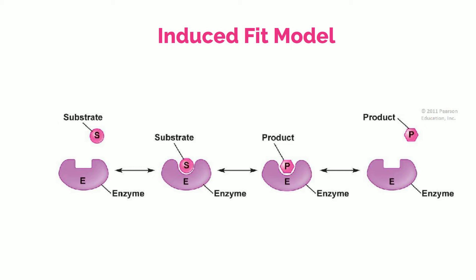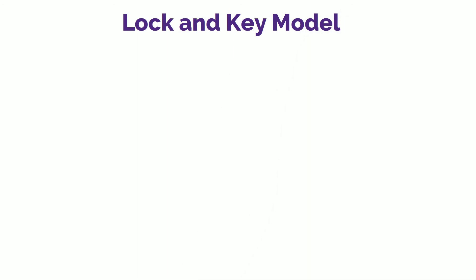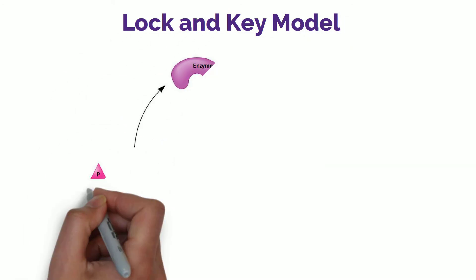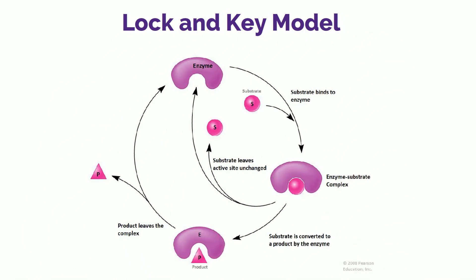The product then unbinds, leaving the enzyme free to bind to another substrate. In the lock-and-key mechanism, the substrate binds to the enzyme forming an enzyme-substrate complex. The substrate can then unbind and remain unchanged, or it can be modified by the enzyme and converted into a product when it leaves the complex. In the end, the enzyme is free to bind to another substrate.